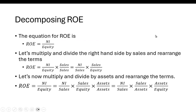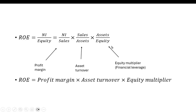How do we decompose return on equity? We do the same tricks as before and one additional trick — we multiply by sales over sales, then multiply by assets over assets. In the end, we get net income over sales, which is profit margin; sales over assets, which is asset turnover; and assets over equity, which is referred to as the equity multiplier — it's a measure of financial leverage. So profit margin times total asset turnover times the equity multiplier gives us return on equity.